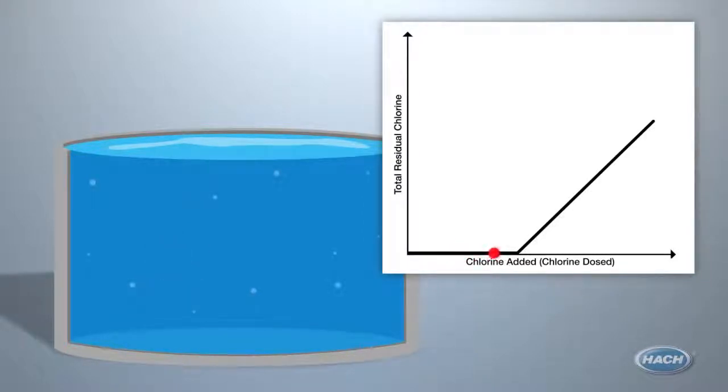So we do not measure much, if any, chlorine. But eventually the chlorine added has exceeded the demand and we measure more chlorine, as is indicated by the graph in the upper right hand corner of your screen.